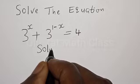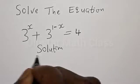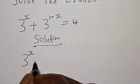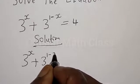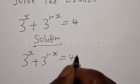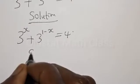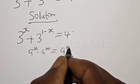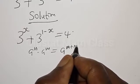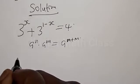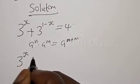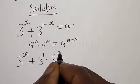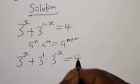Solution. We have the given equation: 3 raised to power x plus 3 raised to power 1 minus x is equal to 4. Remember, if you have a raised to power n multiplied by a raised to power m, it is the same thing as a raised to power n plus m. Therefore our equation becomes 3 raised to power x plus 3 raised to power 1 multiplied by 3 raised to power minus x is equal to 4.